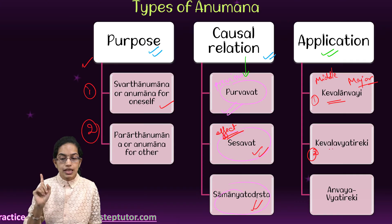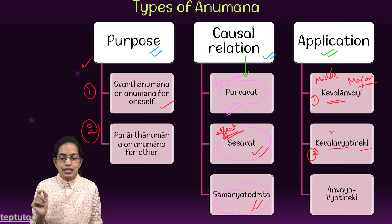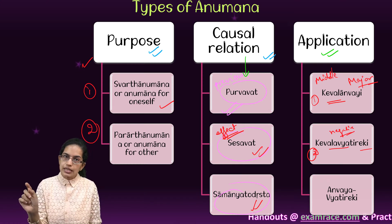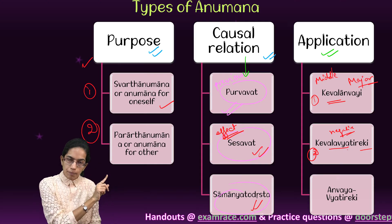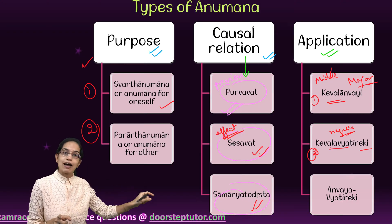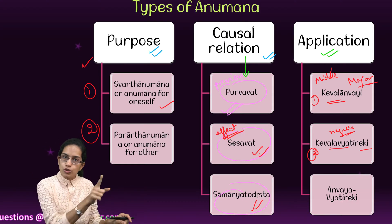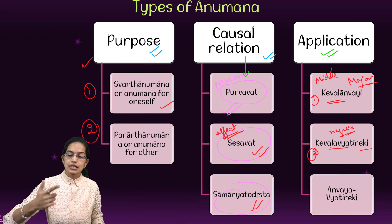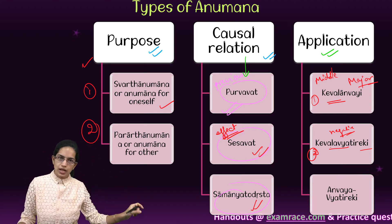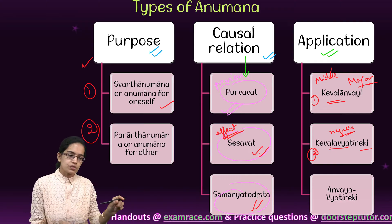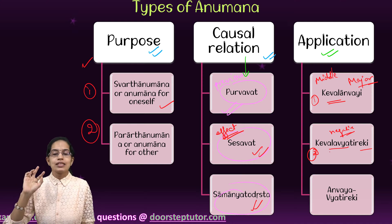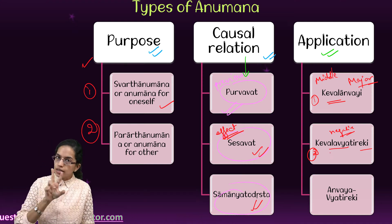The second application type is kevalianvratike, where the middle term is only negatively related to the major term. For example: no non-soul substance has life — meaning all soul substances have life — but it is represented negatively. Then I say all living beings possess life. This negative relation between the middle term and the major term is what characterizes kevalianvratike.